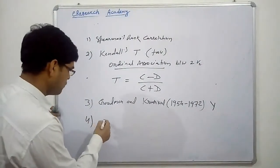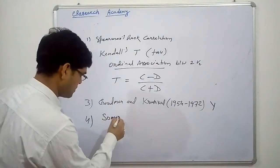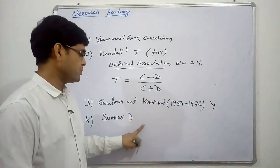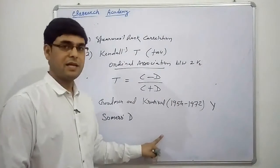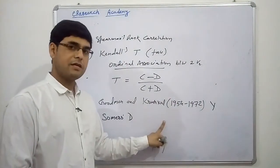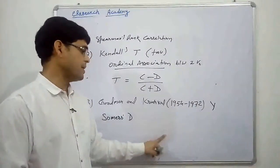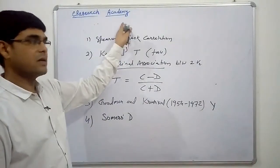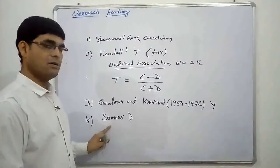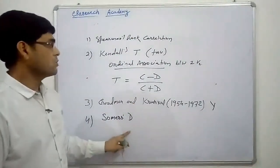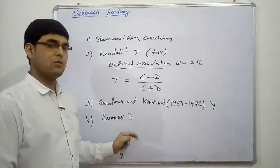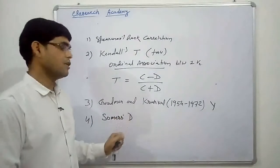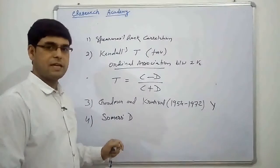Fourth, we have Sommer's D (delta). Sommer's delta measures the association between two possibly dependent ordinal variables, generally measuring the level of agreement and disagreement between two paired categorical variables. These are the four methods under grouped or non-parametric or categorical data. These were the techniques for calculating correlation under different cases, which we will discuss with numerical examples in coming videos. Thank you very much for watching. Have a nice day. God bless you.